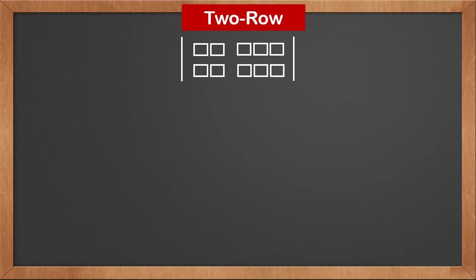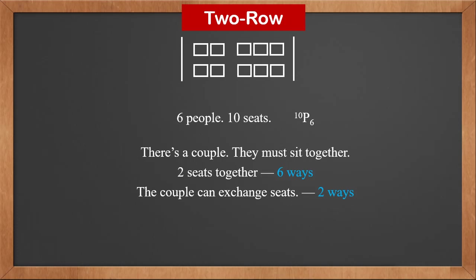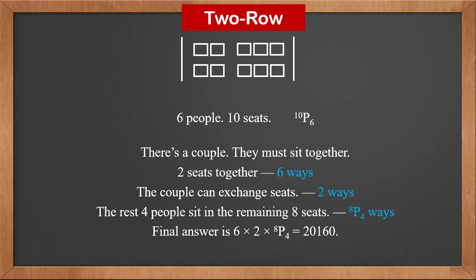These are two rows of seats, each row has five seats — two on the left and three on the right — with four aisle seats and four window seats. We are seating six people in those ten seats. If there's no limitation, there are 10P6 ways. But now there's a couple who must sit together. First, let's figure out how many ways two people can sit together: there are six ways if two seats are adjacent. The couple can also exchange seats — that's two ways. Once the couple is seated, the rest four people can sit in the remaining eight seats: that is 8P4. So the answer is 6 × 2 × 8P4, which is 20,160.